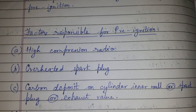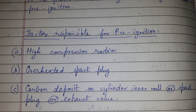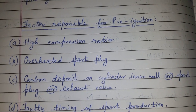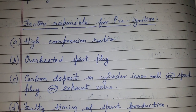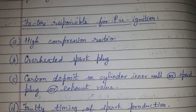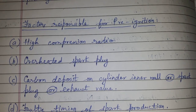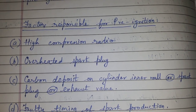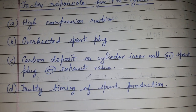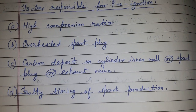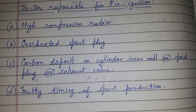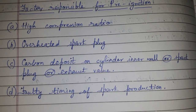Third, carbon deposits on the cylinder wall, spark plug, or exhaust wall due to incomplete combustion. These carbon deposits may get overheated after compression, causing pre-ignition. Fourth, faulty timing of spark production — it may happen that the spark is produced very early relative to TDC, that is top dead center.